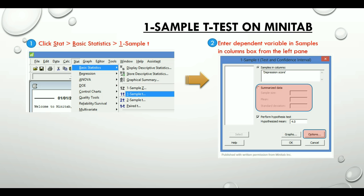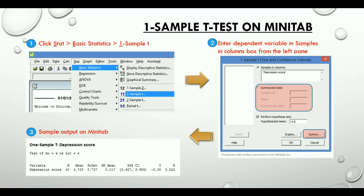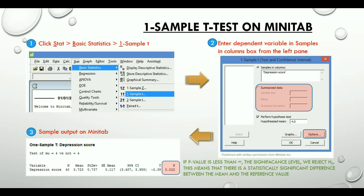Now, here is the sample Minitab output, the descriptive statistics. We are primarily concerned with the p-value here. If p-value is less than the significance level, i.e. alpha, we reject the null hypothesis. This means that there is a statistically significant difference between the mean and the reference value.